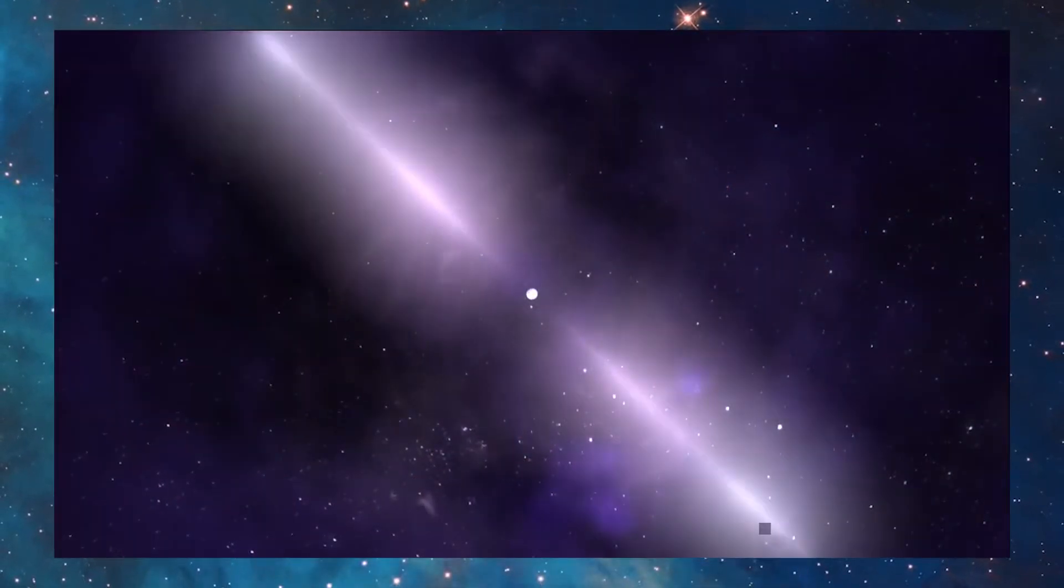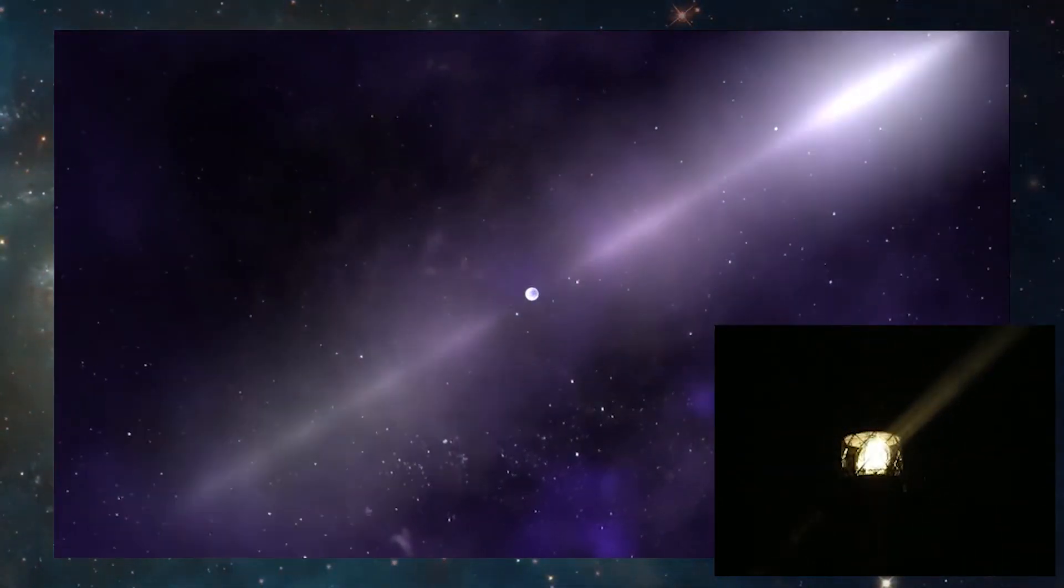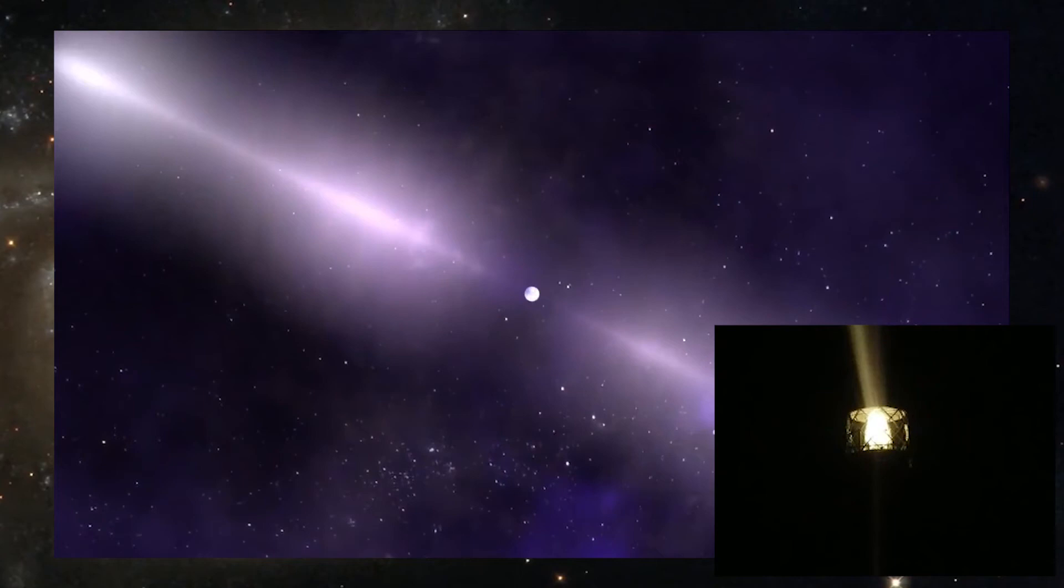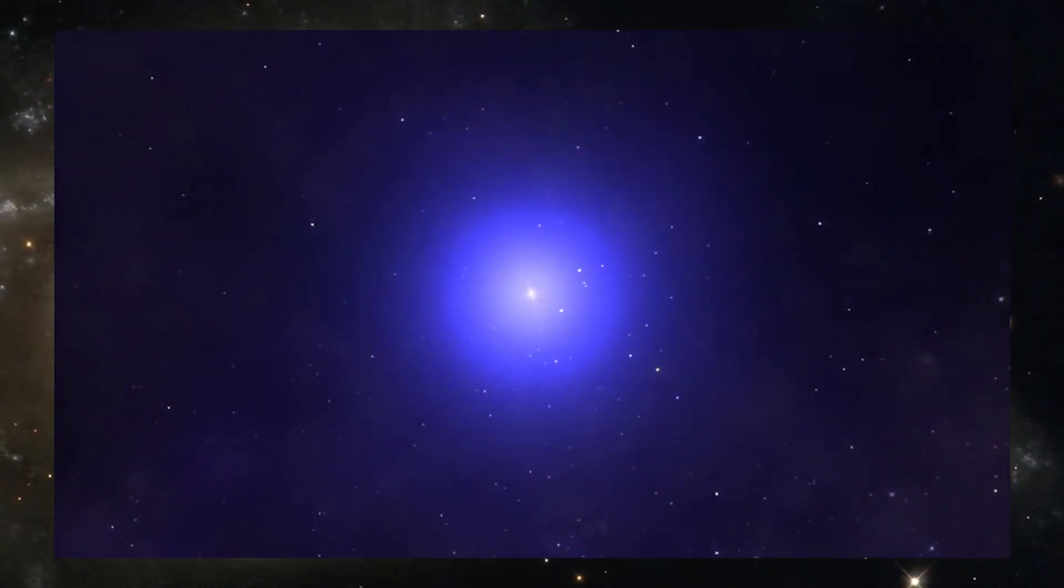The neutron star is one of the most dense objects in the universe. Their incredibly strong magnetic fields allow them to shoot jets of energy out of their poles as they rotate. As the star spins, these beams of energy sweep across the sky like a lighthouse, giving it the name a pulsar. From Earth, this pulsar appears to blink on and off as long as the Earth lies in the path of the beam.